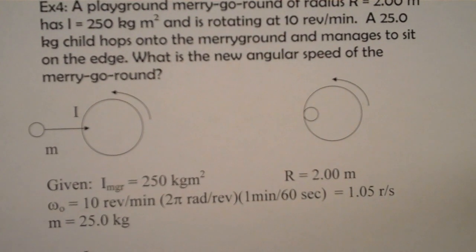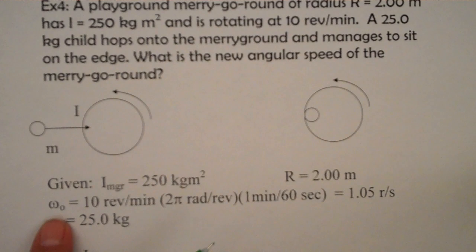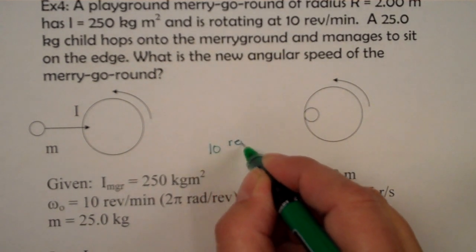So the information that we're given is the moment of inertia of the merry-go-round, the radius of the merry-go-round, 2 meters, its initial angular speed in revolutions per minute. So of course we're going to need to change that to radians per second. And if we have 10 revolutions per minute,